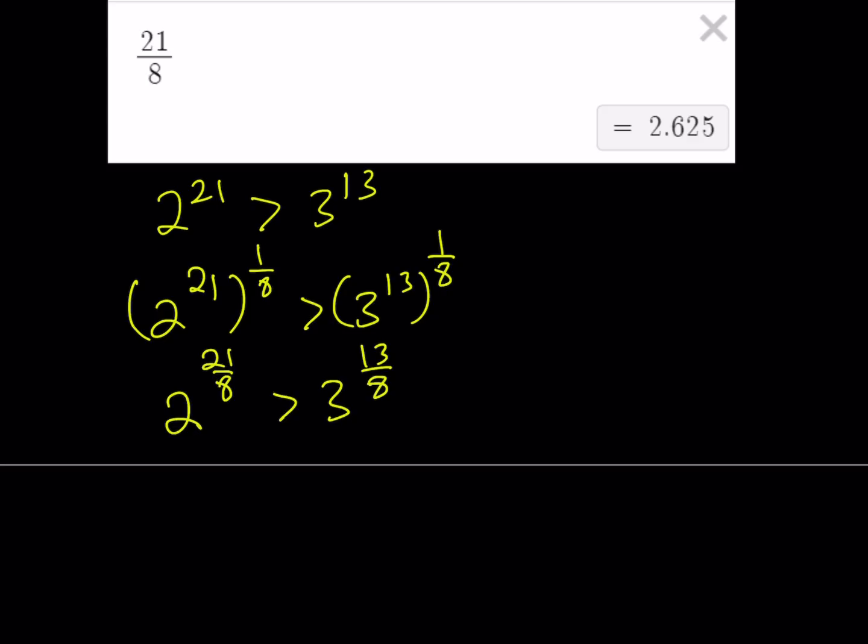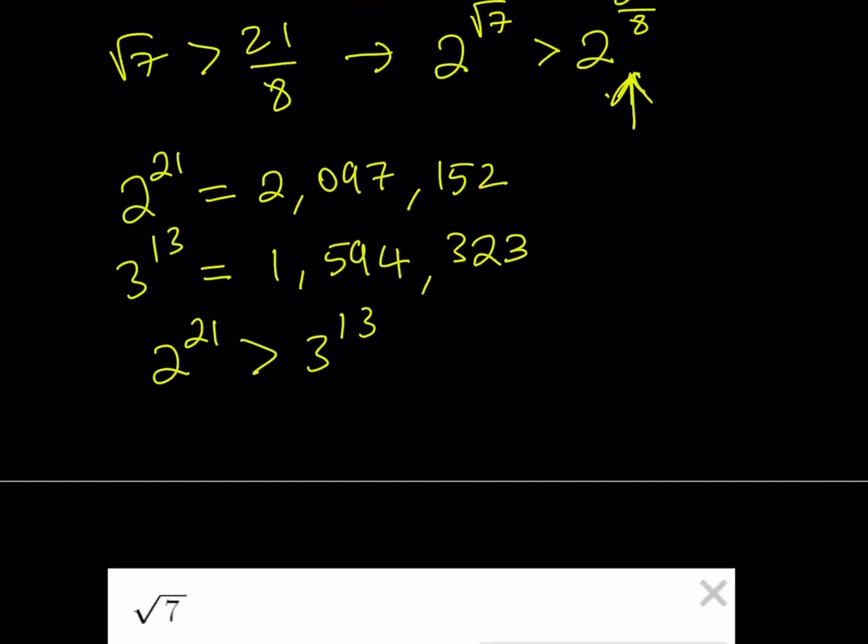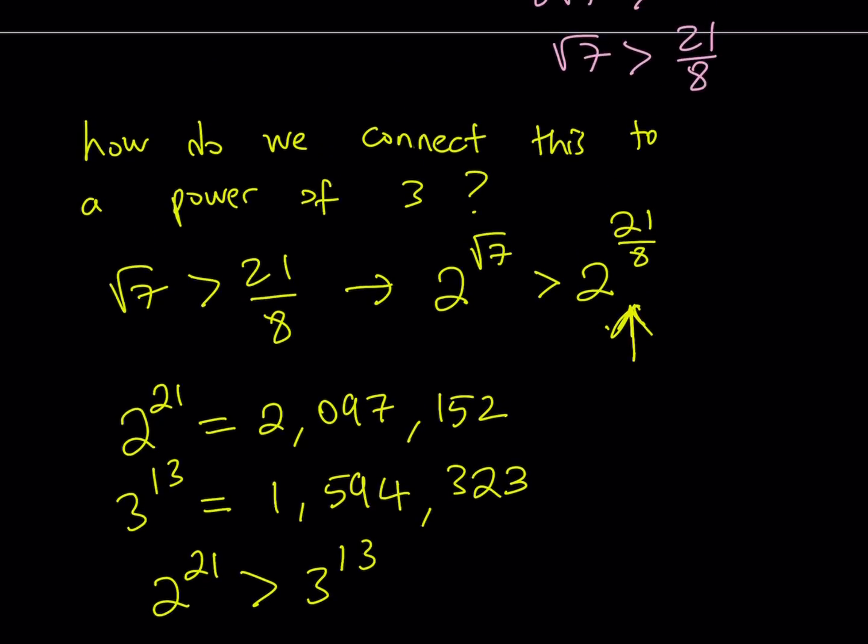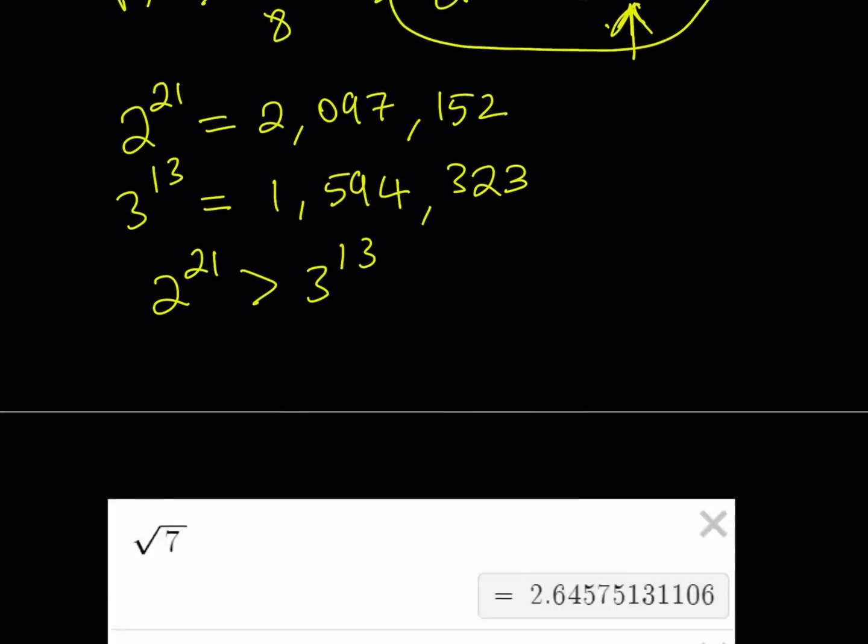Now, how does this help us, right? Okay. Now, we were able to compare a power of 2 to the power of 3. Now, we do know something else. We're going to put it together. Well, we already know that 2 to the power root 7 is greater than 2 to the power of 21 eighths.